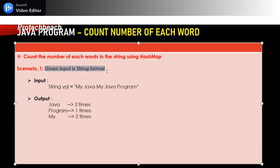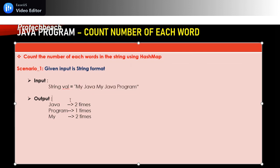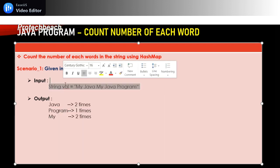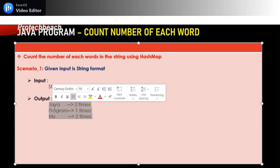The first scenario: the given input is in the form of a string — for example, something like 'my Java my Java' or any string value. The expected output is how many times each word got repeated. In this example, 'my' is repeated two times and 'Java' is repeated two times and 'program' one time. This is the expected output — they give you the input and you provide the output like this.